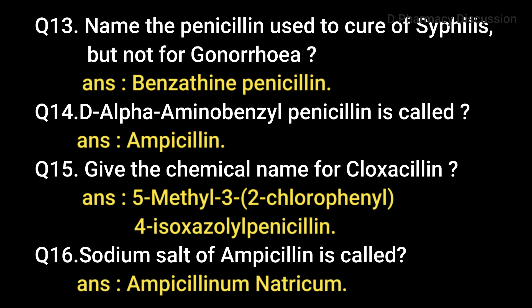Question 15: Give the name for cloxacillin. Answer: 5-methyl-3-(2-chlorophenyl)-4-isoxazolyl penicillin. Question 16: The sodium salt of ampicillin is called ampicillinum natricum, that is sodium ampicillin or ampicillin sodium. Some common brand names for ampicillin sodium are Penbritin S, Domicillin, Omnipen-N, etc.